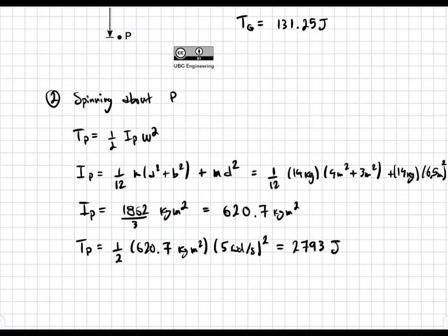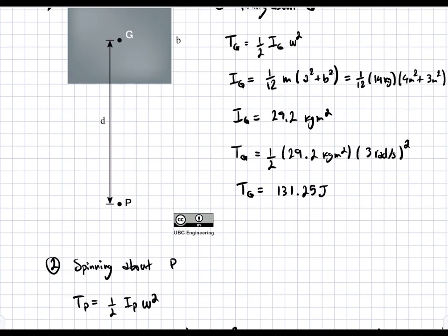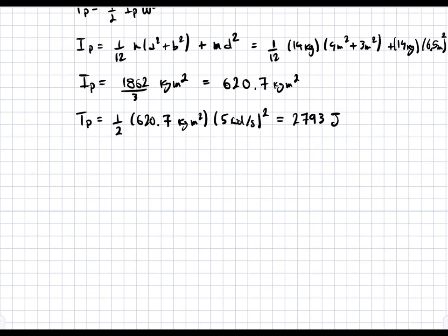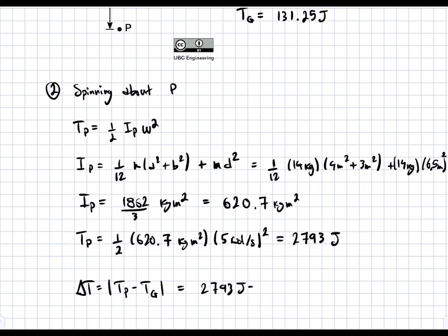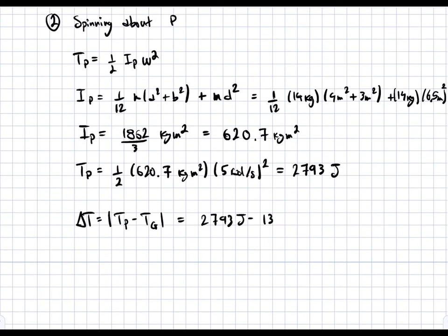This is much more kinetic energy than spinning about the center of gravity. So now if we want to find delta T, it's going to be equal to T_P minus T_G, the absolute value of it because we don't really care about the sign. So if we do this, we're going to get 2793 joules minus 131.25 joules, which equals to, and this is the absolute value of it, which equals to 2,661 joules. And that's our delta T, or our difference in kinetic energy between the two cases.